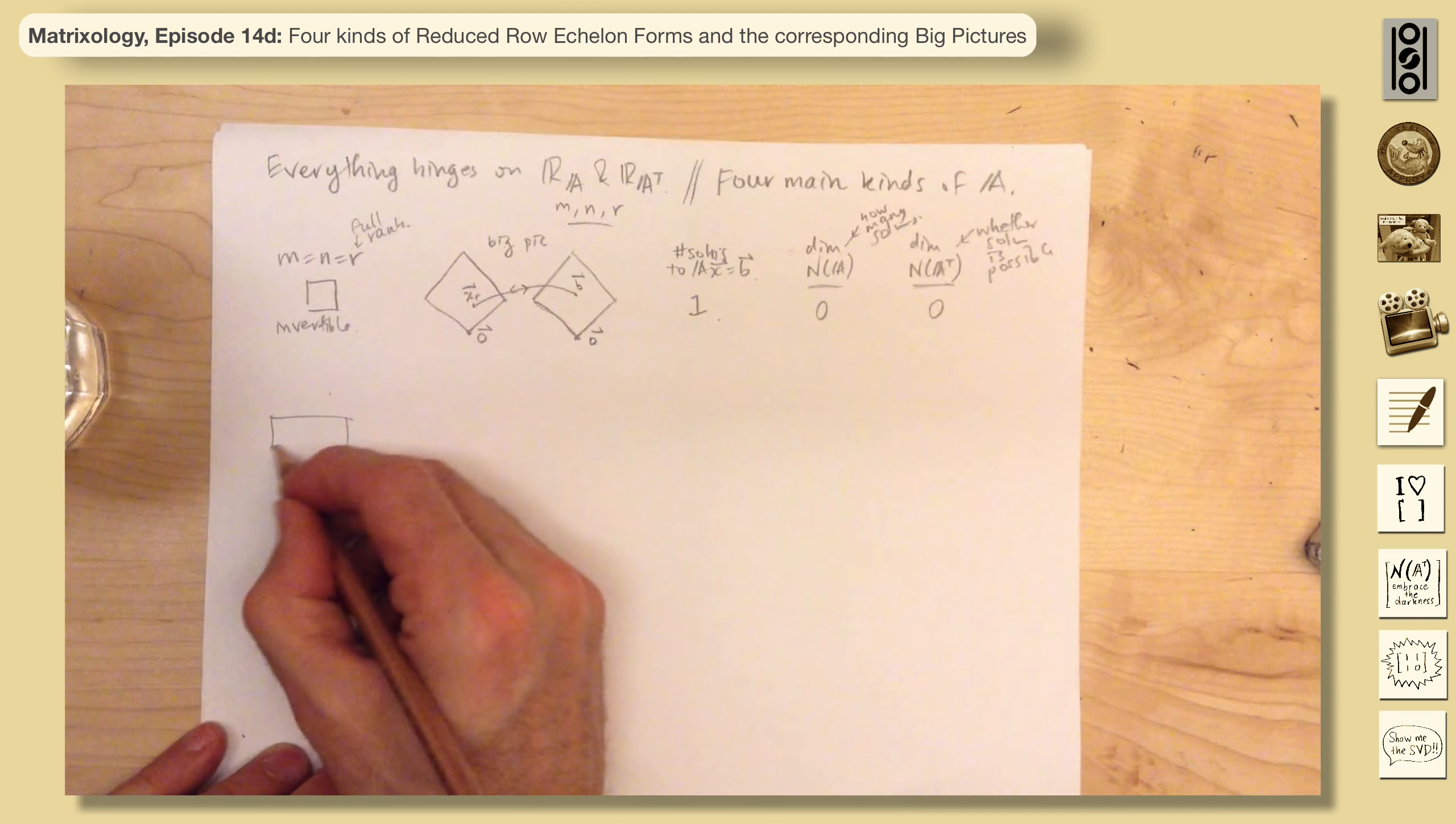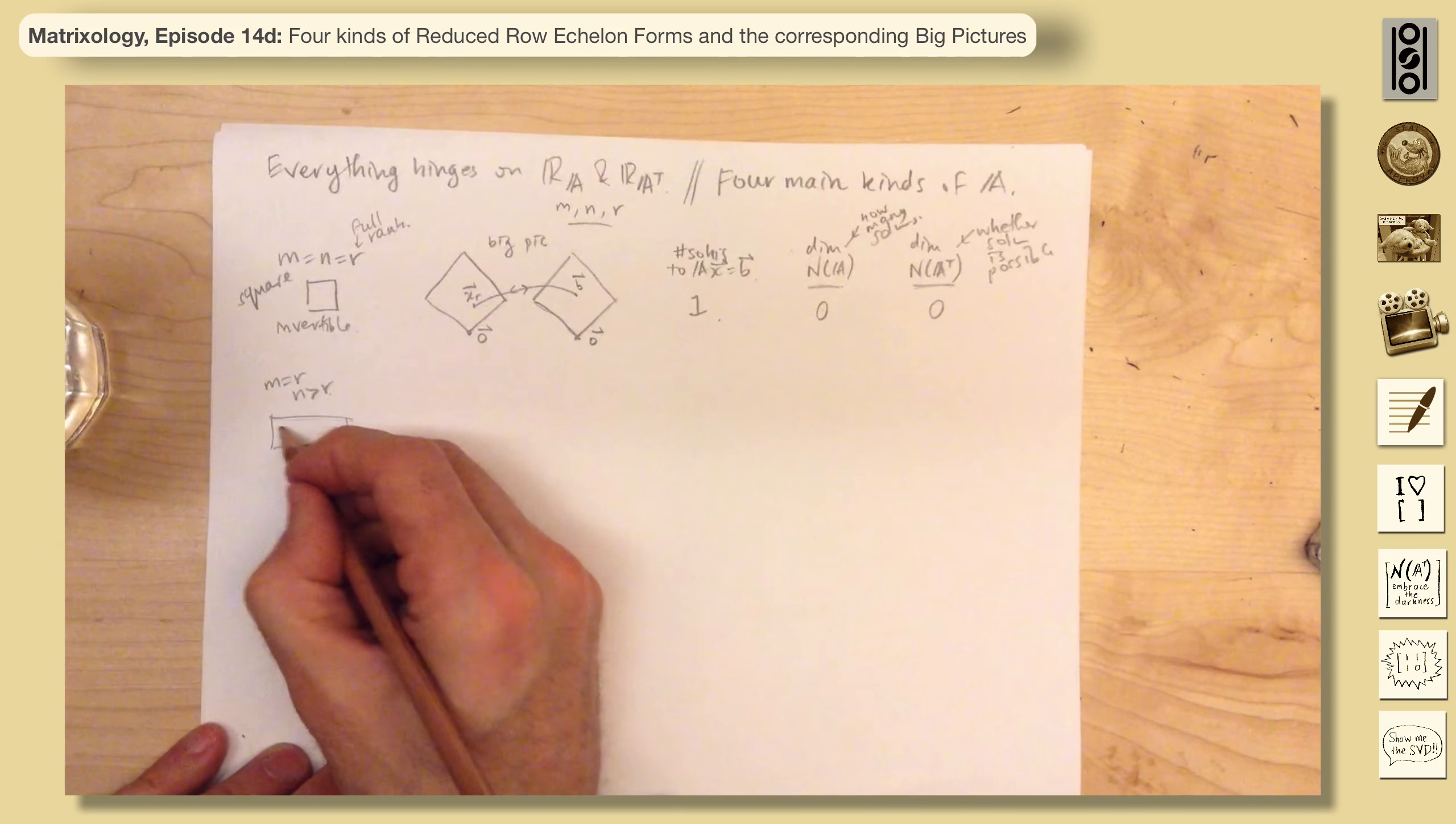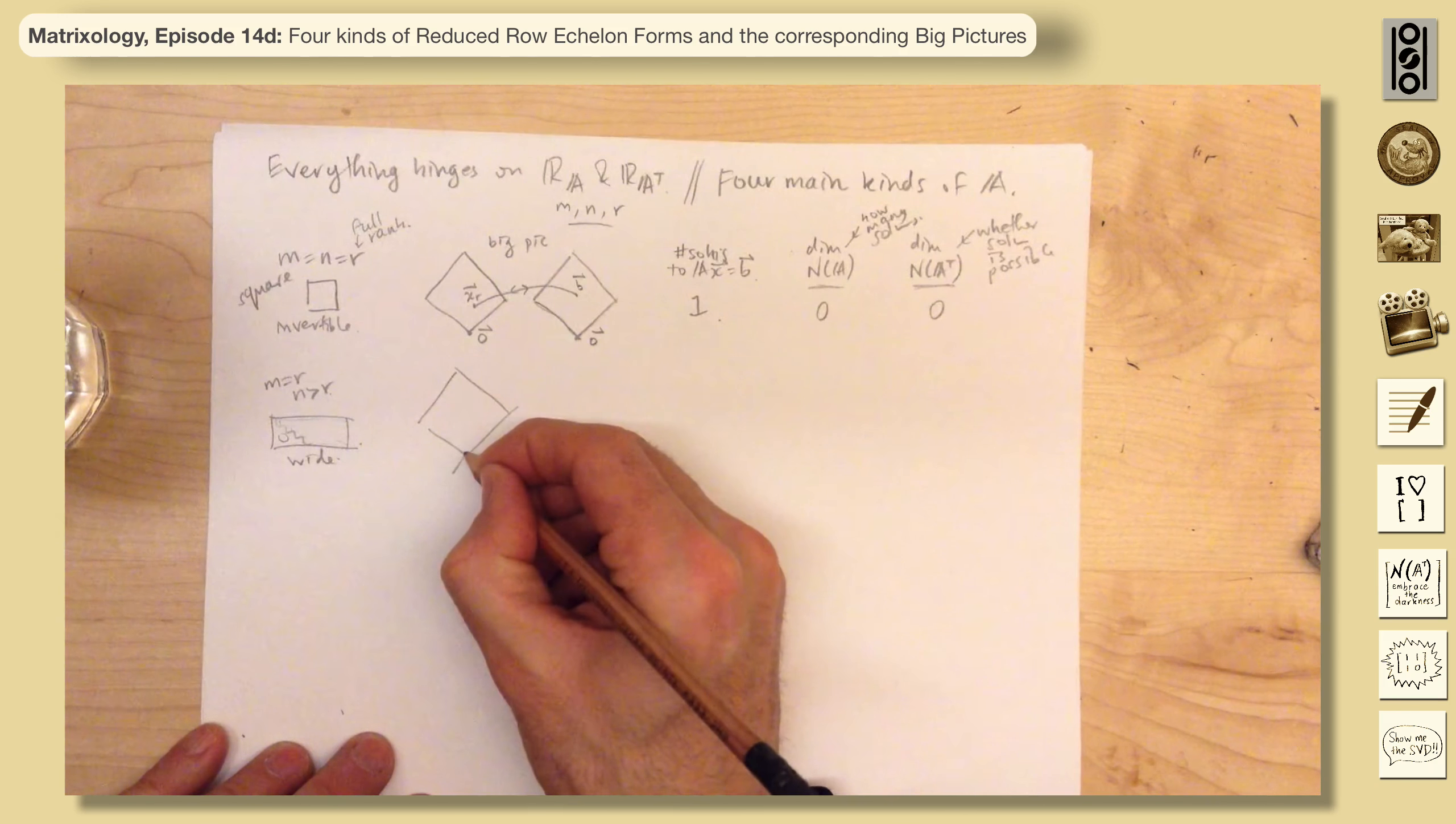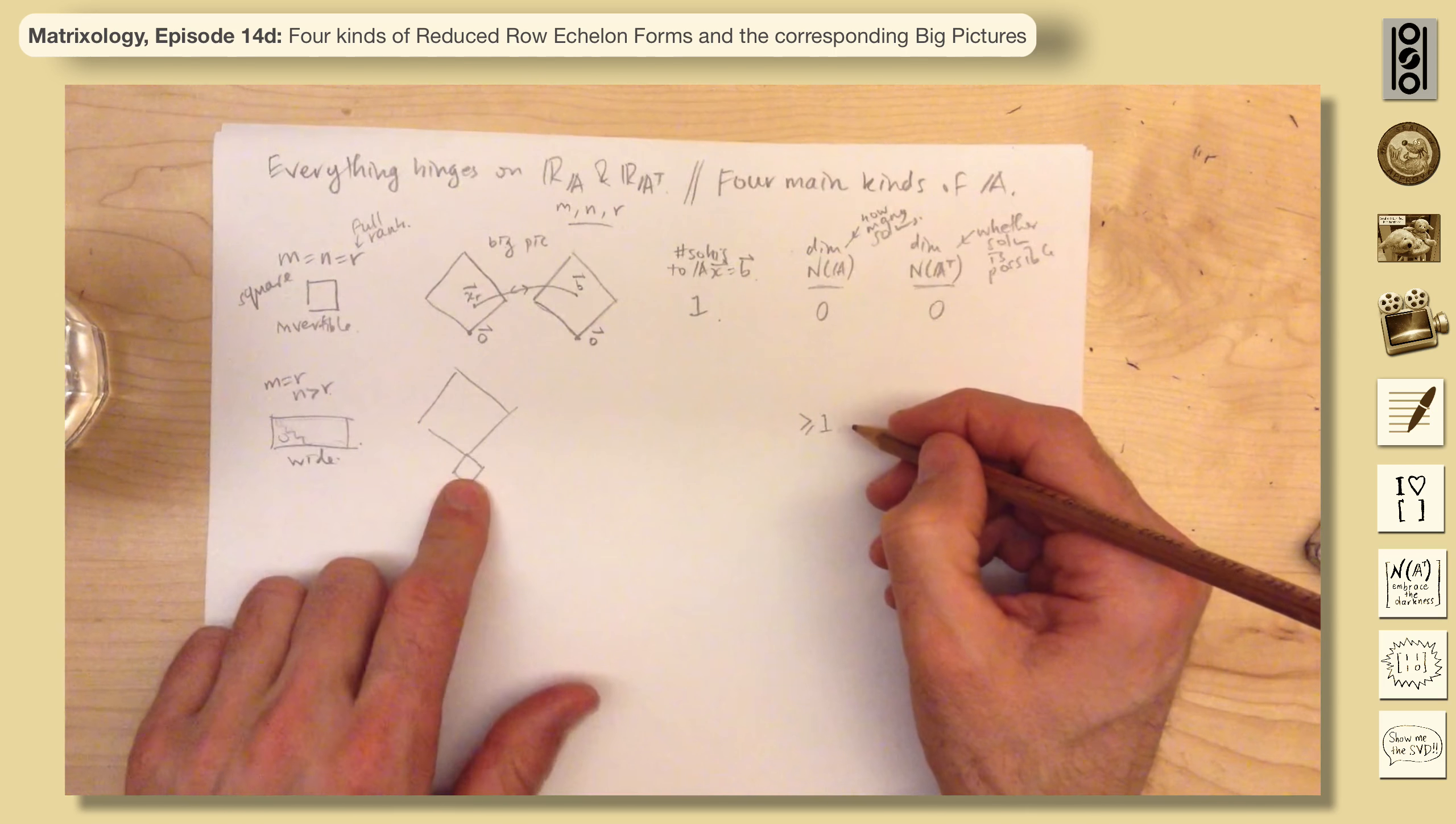It could be a wide one. So it's just wide, so this is square. So M, and then also M equals R, but N is greater than R. So it's wide, and if you looked at the rank, it would look like this. If you looked at the row reduced echelon form, you get ones, and there'd be no zero rows. So now the big picture looks like this, and there is a null space. So the dimension of left null space is zero, and here it's greater than or equal to one. There is a null space.